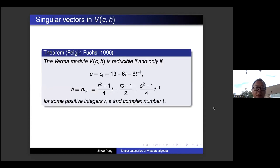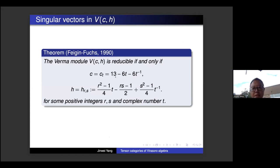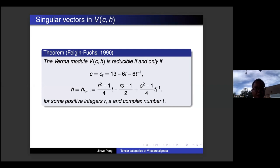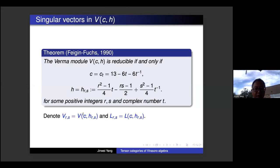The Verma module V(c,h) is usually irreducible unless in the following case it's reducible. If we parameterize c by 13 − 6t − 6t⁻¹, and when h equals h_{r,s} = (r²-1)/(4t) − (rs-1)/4 · t⁻¹... only when h equals h_{r,s} is V(c,h) reducible. For simplicity, I denote V(c, h_{r,s}) by V_{r,s} and the simple quotient by L_{r,s}. They are the interesting ones.